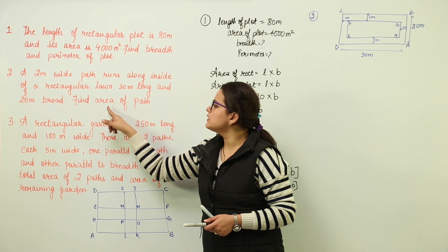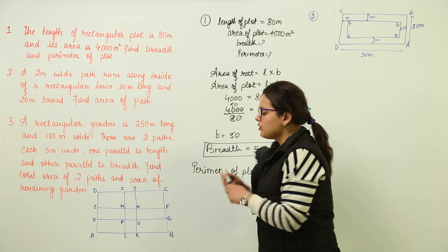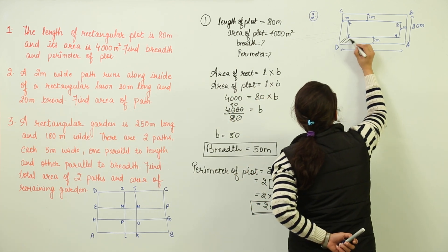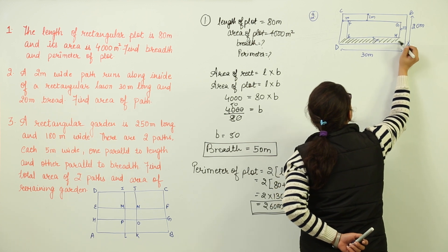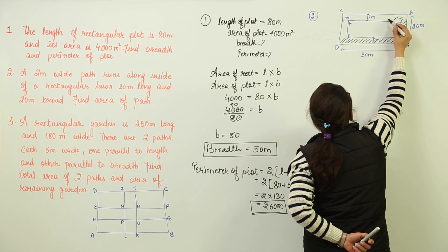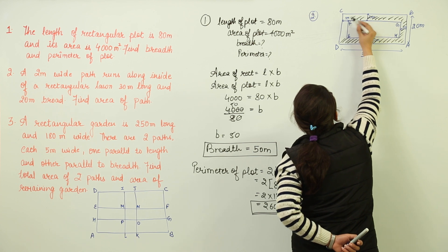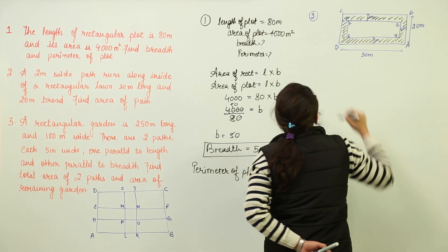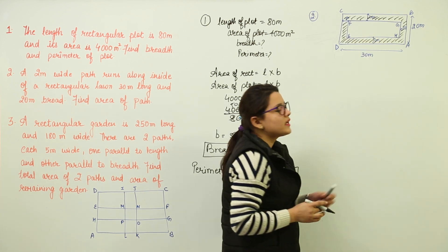Now what are we supposed to find? We are supposed to find the area of path. Now here the area is represented with the portion that I am shading. The shaded portion here is representing the area that we are supposed to find out.